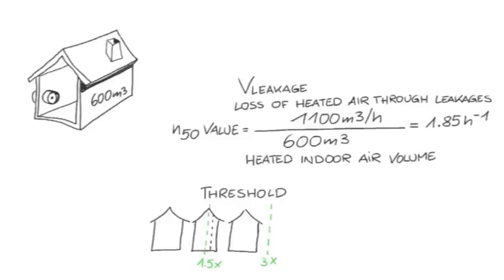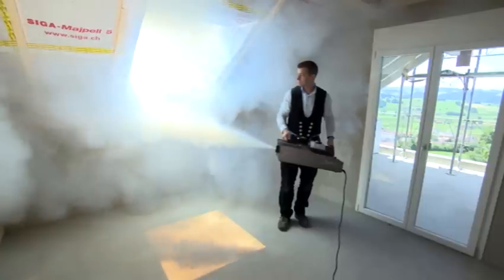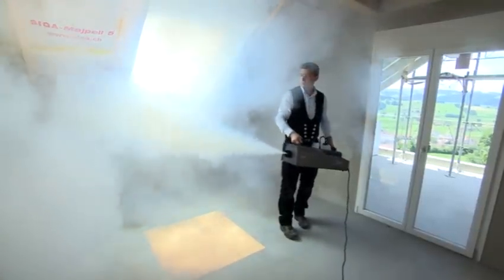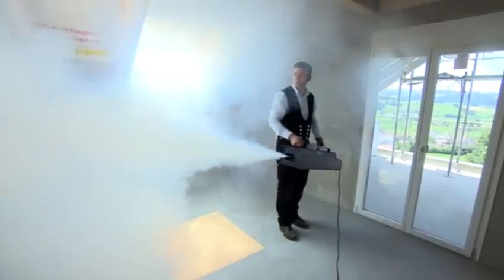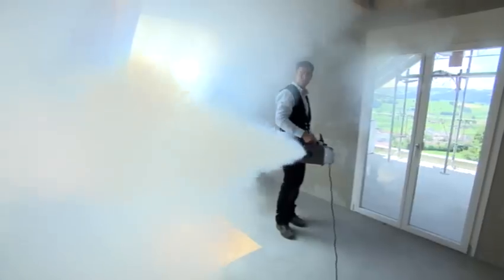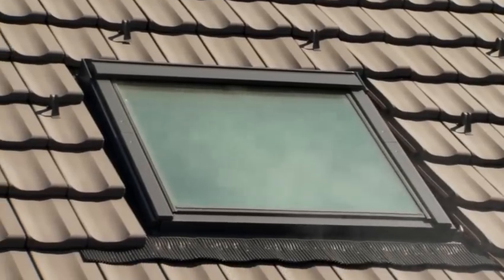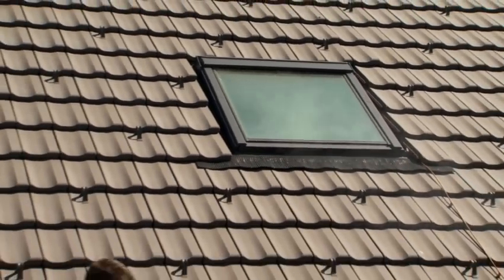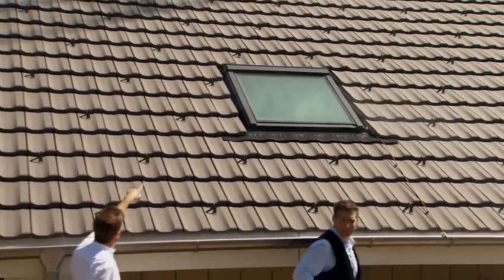In our example, the air change rate is too high because the architect planned a building with a ventilation system. The permissible limit value of 1.5 has been slightly exceeded. The craftsman has to search for the leaks. To do so, he fills the entire structure with theatrical smoke. A positive pressure is established. It is now possible to see from the outside where smoke is escaping through the building envelope.